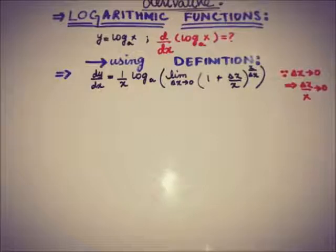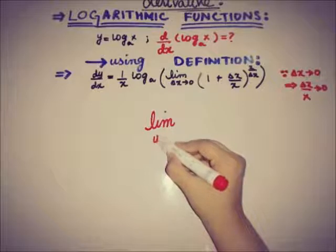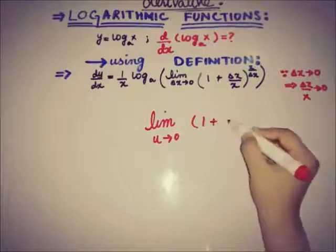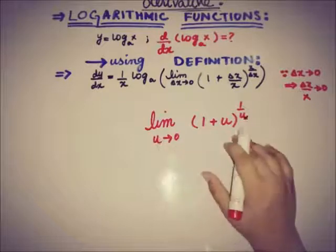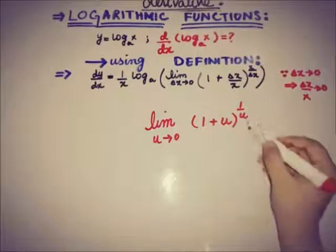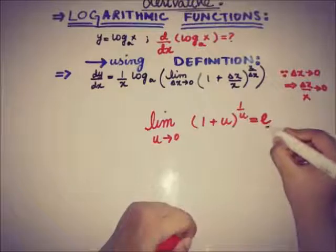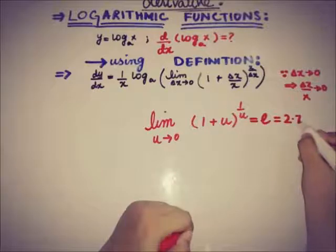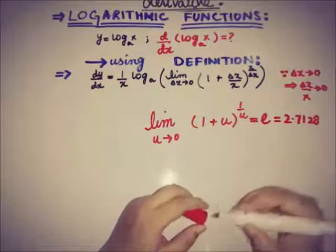There is another limit formula that limit u approaches to 0, if 1 plus u raised to the power 1 by u, if 1 plus u raised to the power 1 by u and the limit here is u approaches to 0, then this will be equal to e, that is exponential. It's a very common constant having a value about 2.7128.